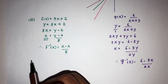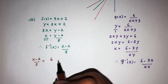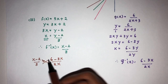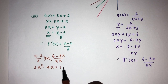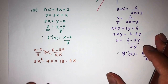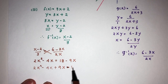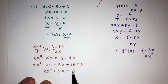Now we have to solve the equation f⁻¹(x) equals g⁻¹(x). So on one side we have x minus 2 over 3, equal to 6 minus 3x over 2x. We cross multiply to get 2x squared minus 4x equal to 18 minus 9x. Sending everything to one side: 2x squared minus 4x plus 9x minus 18 equals 0, which simplifies to 2x squared plus 5x minus 18 equal to 0.